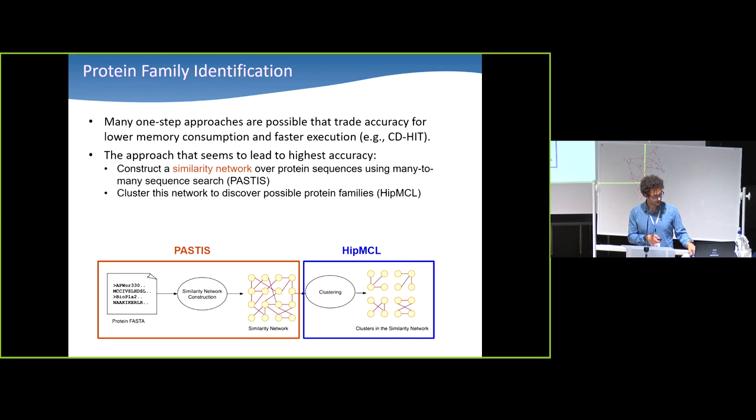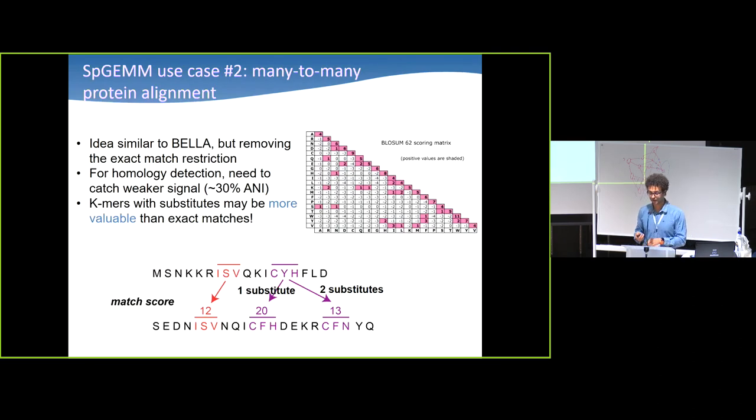So we call the first step the construction of these things, similarity network construction. And let's see how it can be done. This is very similar to the BELLA work I described for genome assembly, except that there is this reality here that the signal in genome assembly was I'm finding identical portions. Because I'm sequencing the same genome, and if two reads were overlapping, that means that overlapping section needs to be identical, up to the sequencing errors. So it's a much stronger signal that I was trying to detect. Here, I am trying to find similarities that have been evolved over millennia, millions of years. So the signal is much weaker. If I was looking for exact k-mers, even if I choose my size k to be as small as seven, I would actually miss a lot of potentially homologous proteins.